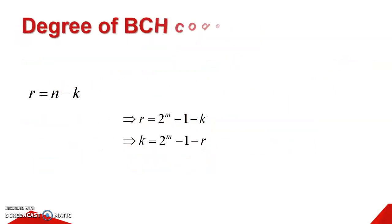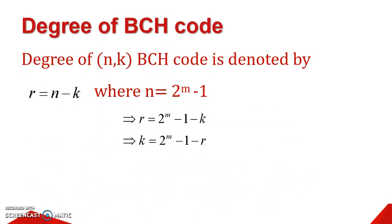Next, what are the degree of BCH Code? Degree of n,k BCH Code is denoted by r equals n minus k, where n is 2 to the power m minus 1. Therefore, r equals 2 to the power m minus 1 minus k, and from this, k equals 2 to the power m minus 1 minus r. This formula is important for calculation of k.